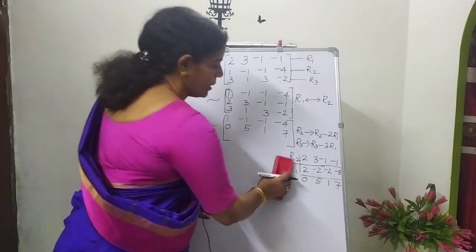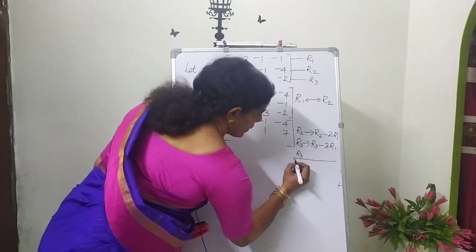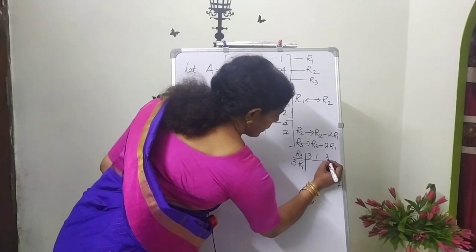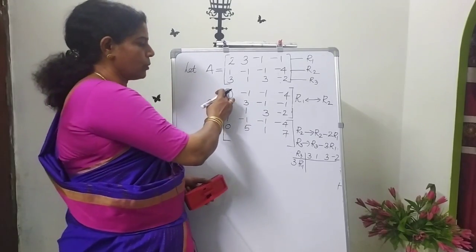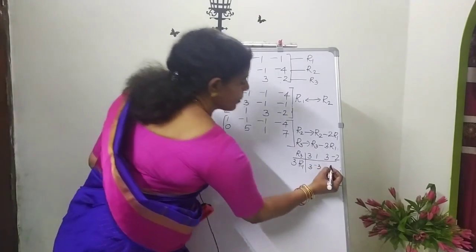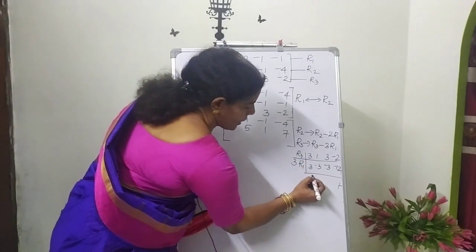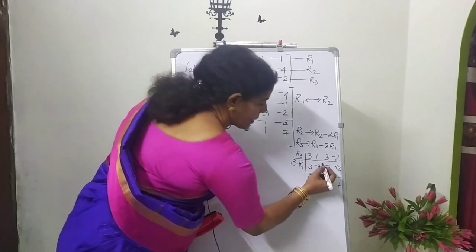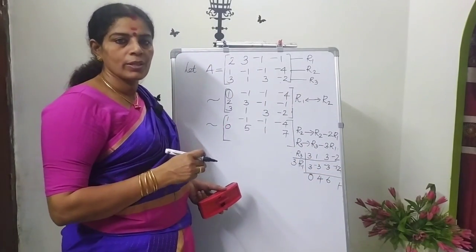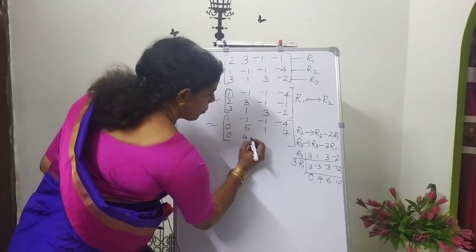R3 gives R3 minus 3R1. R3 is 3, 1, 3, minus 2. Multiply 3R1: 1 into 3 = 3, minus 1 into 3 = minus 3, minus 1 into 3 = minus 3, minus 4 into 3 = minus 12. Subtracting: 3 minus 3 = 0, 1 minus (minus 3) = 4, 3 minus (minus 3) = 6, minus 2 minus (minus 12) = 10. New R3: 0, 4, 6, 10.